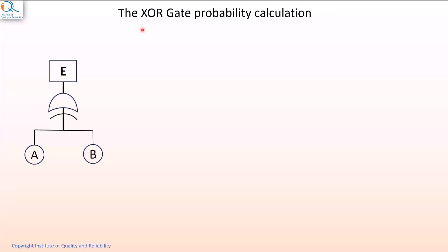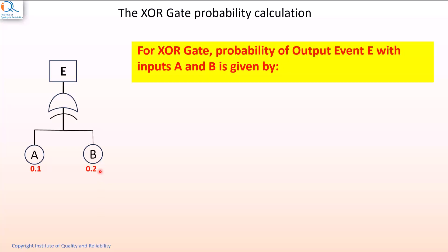The XOR gate example shown here has top level event E and lower level events A and B with probability of 0.1 and 0.2 respectively. For an XOR gate, probability of output event E with inputs A and B will be given by A bar B plus AB bar, where A bar is equal to 1 minus A and B bar is equal to 1 minus B. So, A bar and B bar are complements of A and B.